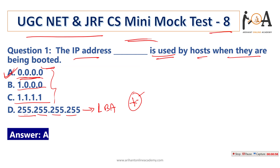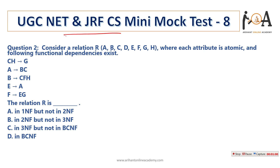The next question: consider a relation R(A, B, C, D, E, F, G, H). In this relation several elements exist — A, B, C, D, E, F, G, H — where every attribute is atomic, and the following functional dependencies are given.